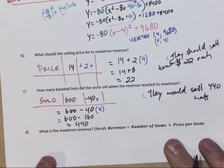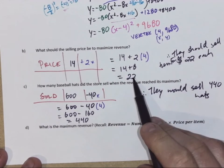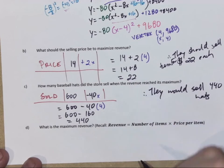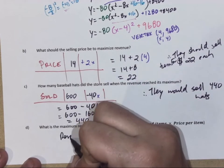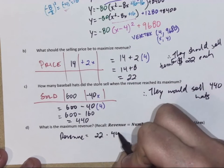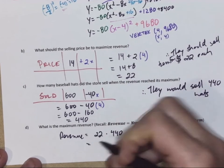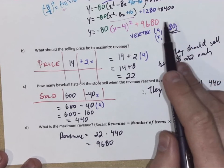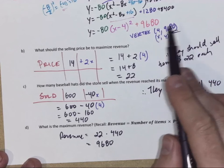The revenue for how much cash they're going to make is how many they sold times what's the price. So the revenue is going to be twenty-two times four forty, which when you type that in, nine thousand six hundred eighty. Wait a minute, we've already seen that number. There it is, right there. So by putting in vertex form, we can get the max revenue.